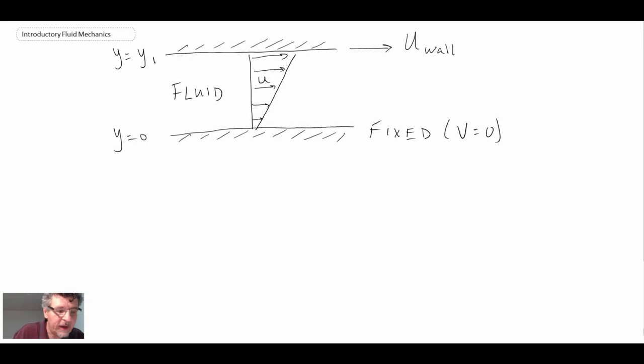With the no-slip condition, the velocity at y equals zero on the lower wall, if it is fixed, will be equal to zero. On the upper wall, the velocity will be equal to the wall velocity itself. No-slip says that the fluid will be moving at the same velocity as the location of the wall. If the wall is fixed, it's not moving. If it's moving, it is at the wall velocity.